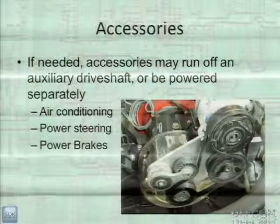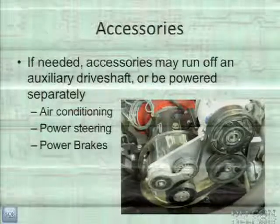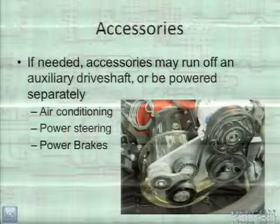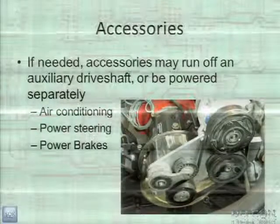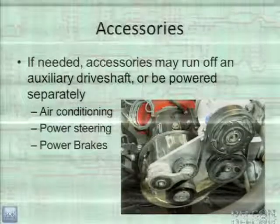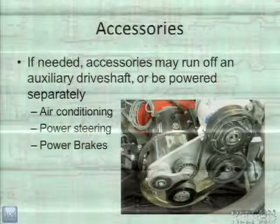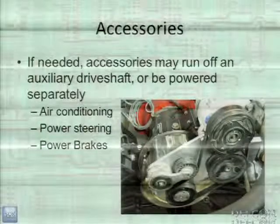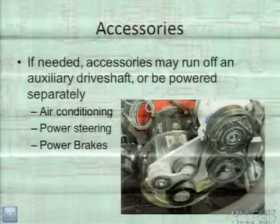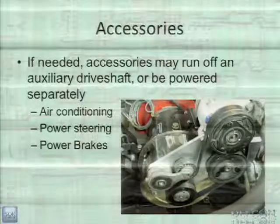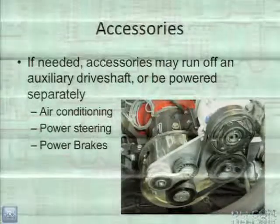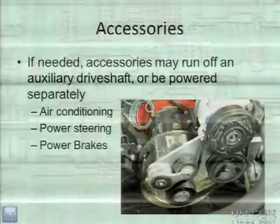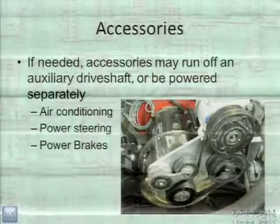One of the great things about a VW Bug is you don't need much — everything's manual. For more modern vehicles or people with more discriminating tastes, you need air conditioning, power steering, and power brakes. If you need accessories, there are two ways: drive them off an auxiliary shaft — where the motor shaft goes all the way through and you hook a belt to the other side to run AC, power steering, and power brakes — or connect each one to its own separate electric motor.